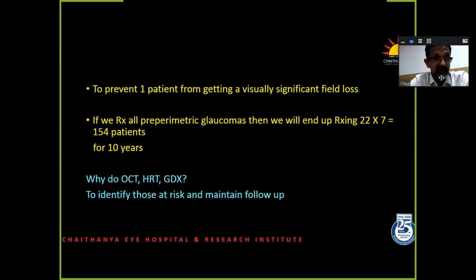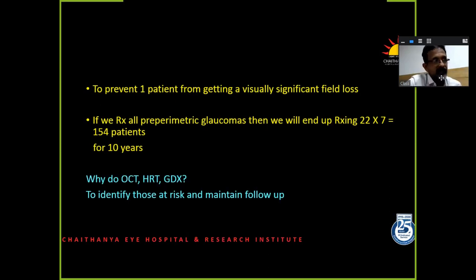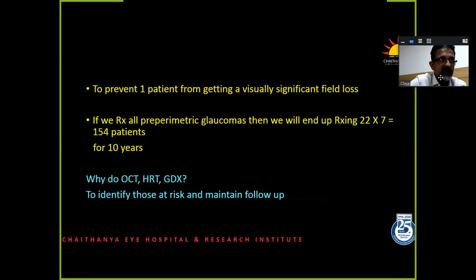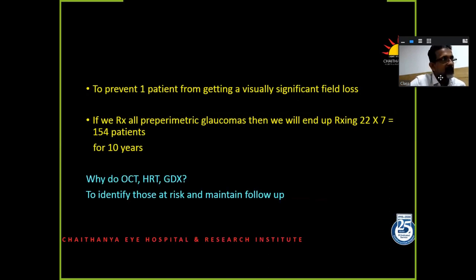That doesn't make sense. This is why we need to do other tests like corneal thickness, OCT, HRT and things like that — you are adding risk factors. If a person is more at risk, you would err on the side of treating an ocular hypertensive. If a person doesn't have any other risk factors, you would err on the side of just observing. You need to maintain follow-up on any person with risk factors, and ocular hypertension would be just a risk factor.